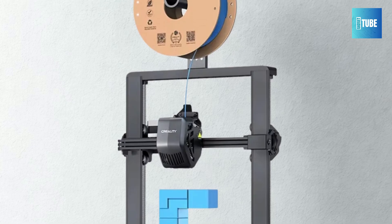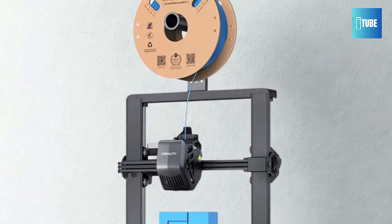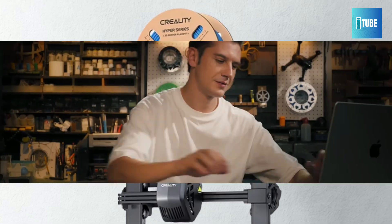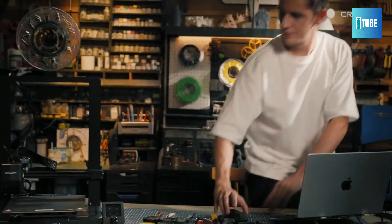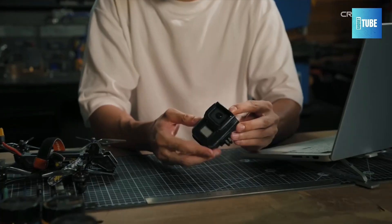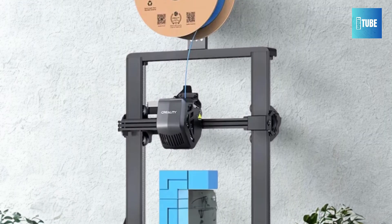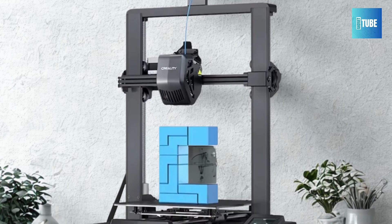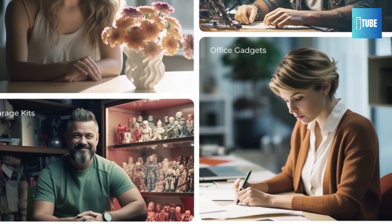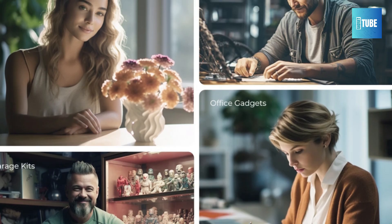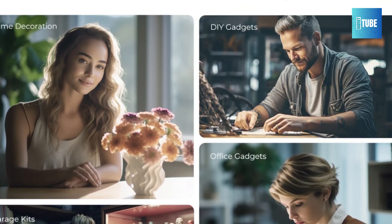Power loss recovery protects prints from interruptions, while the 3.2-inch color knob screen offers easy control. Compatible with Creality Print, Cura, and PrusaSlicer, this printer supports Wi-Fi and USB file transfers. Overall, the Ender 3 V3 SE delivers speed, precision, and user-friendly features for any DIY enthusiast.